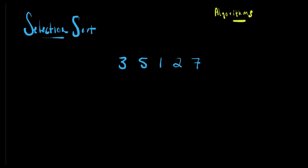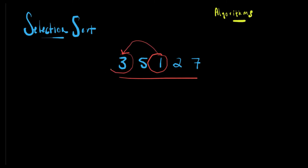How the selection sort is going to work is we are going to use a linear search — which is actually another algorithm I'll explain in another video — basically going through each value in the array and finding the smallest number out of all of those choices. In this case it's going to be one, so we're going to take this one and swap it with the earliest value in the array, which is going to be three.